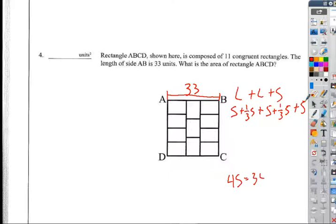All right, so how many short sides do I have? 3 and 2 thirds. I have 3 and 2 thirds short sides, and that's going to equal 33. Does that make sense so far? Yes.